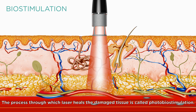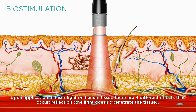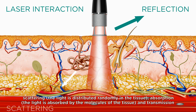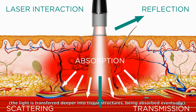The process through which laser heals the damaged tissue is called photobiostimulation. Upon application of laser light on human tissue, there are four different effects that occur: reflection, where the light doesn't penetrate the tissue; scattering, where the light is distributed randomly in the tissue; absorption, where the light is absorbed by the molecules of the tissue; and transmission, where the light is transferred deeper into the tissue structures, being absorbed eventually.